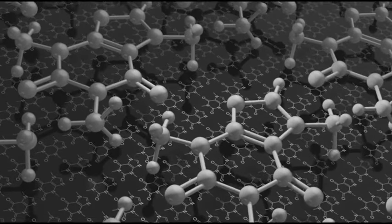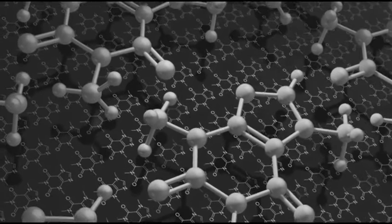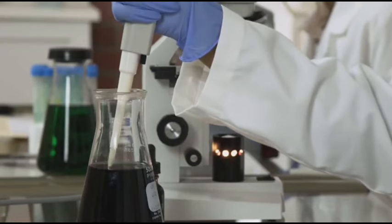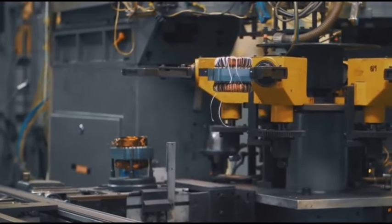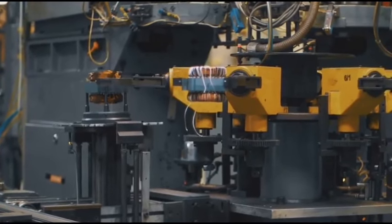So what exactly is graphene? Imagine a single layer of carbon atoms perfectly arranged in a hexagonal lattice. Yes, it's that thin and yet it's incredibly strong. In fact, it's about 200 times stronger than steel and it conducts electricity better than copper. Imagine the possibilities.